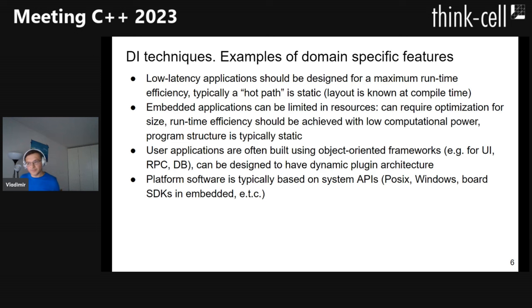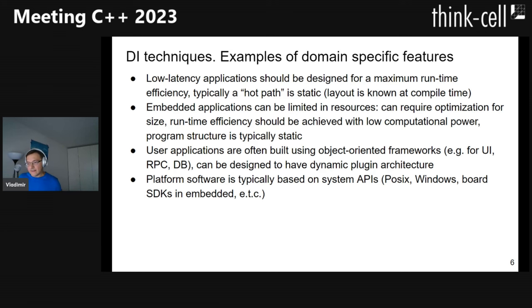User applications are often built using object-oriented frameworks such as UI frameworks, remote procedure call frameworks, or database access layers. These applications can also be designed to have dynamic plug-in architectures. We also have platform software built on top of system APIs — like POSIX, Windows, or board SDKs in embedded — that provides extra services for upper-layer applications.